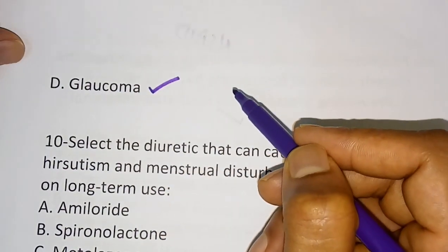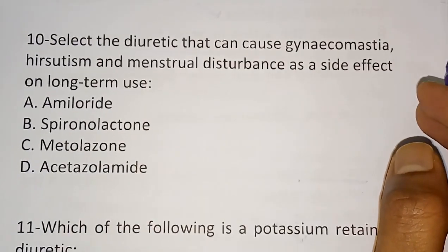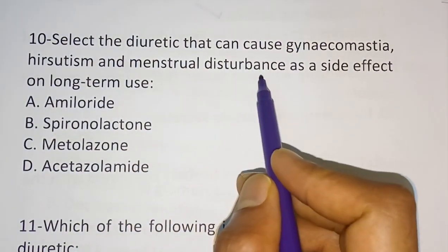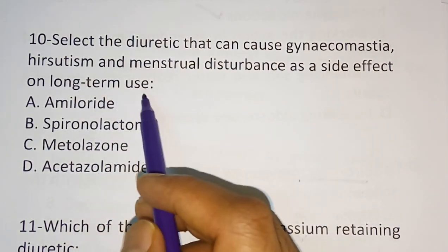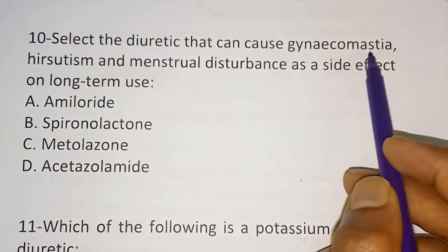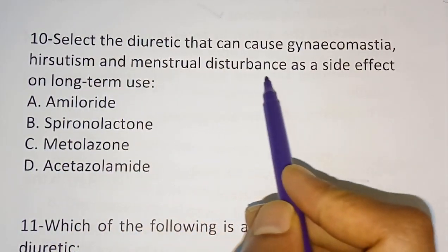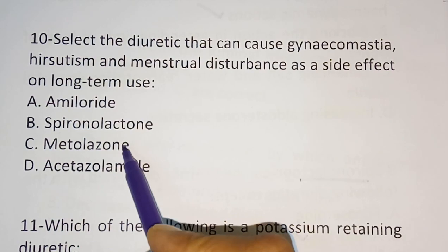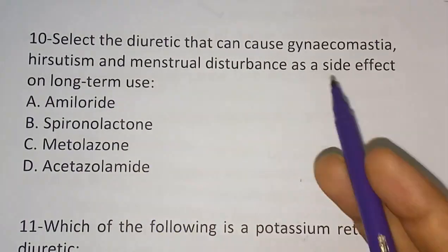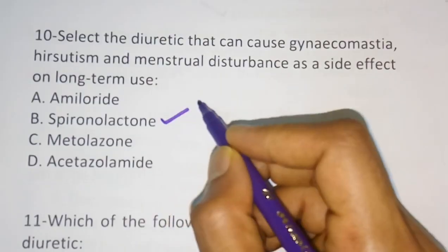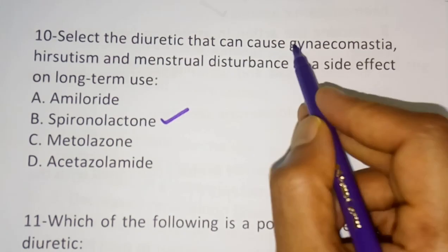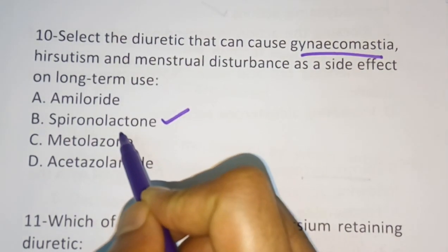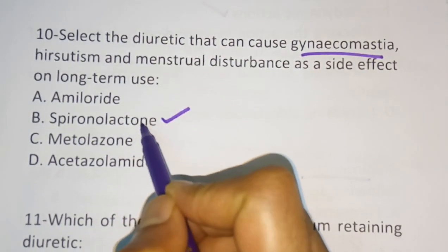Question number ten: Select the diuretic that can cause gynecomastia, hirsutism, and menstrual disturbance as side effects on long-term use. Options are amiloride, spironolactone, metolazone, and acetazolamide. The correct answer is spironolactone. This is an important question — whenever gynecomastia is listed as a side effect of a diuretic, the answer is spironolactone.